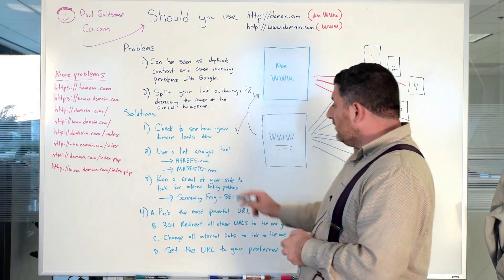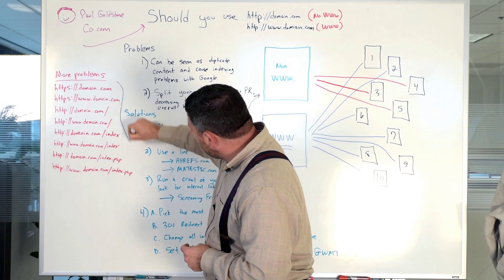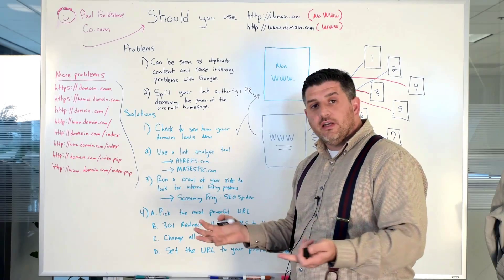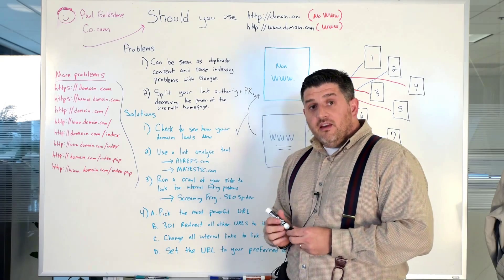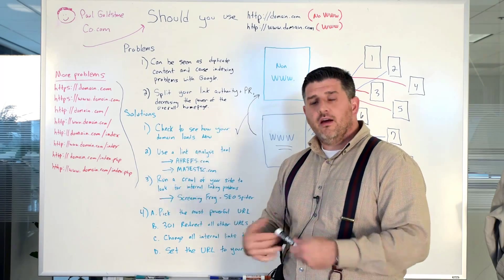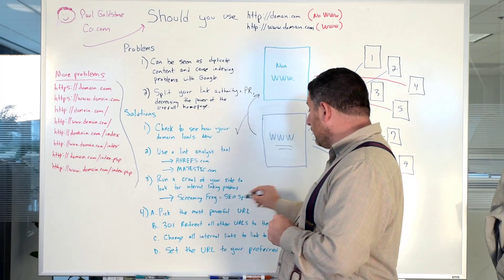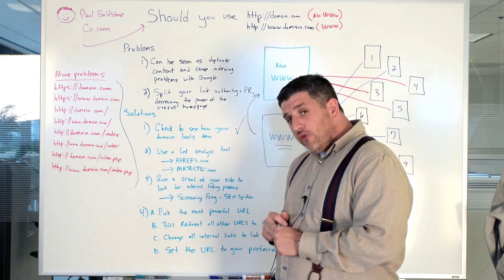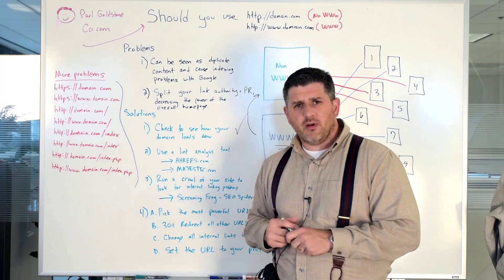The third thing that you want to do is you want to run a crawl over your website because you want to be able to find all of these other versions of your homepage that might be out there just through the internal links on your website. So we use a tool. It's called Screaming Frog SEO Spider. And if you'd like there's some really good tutorial videos on YouTube that you can just search for Screaming Frog or SEO Spider and it'll show you how to use it. I believe that there is no free version of that tool but it's definitely a good investment. I want to say it's like a hundred bucks one-time fee.